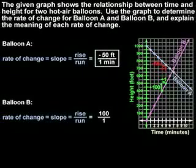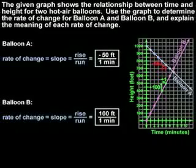And since the units on the y-axis represent the height of the balloon in feet, and the units on the x-axis represent the time in minutes, we write our rate of change as 100 feet over 1 minute.